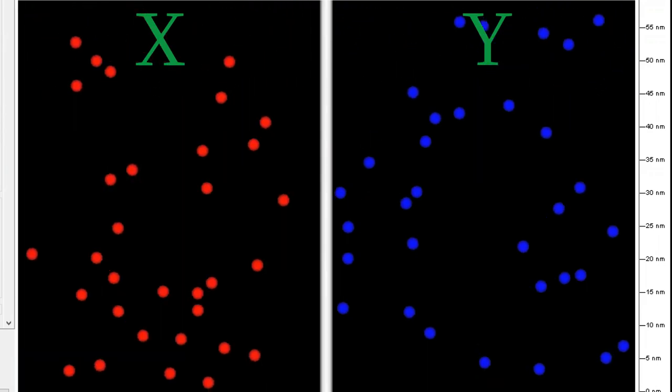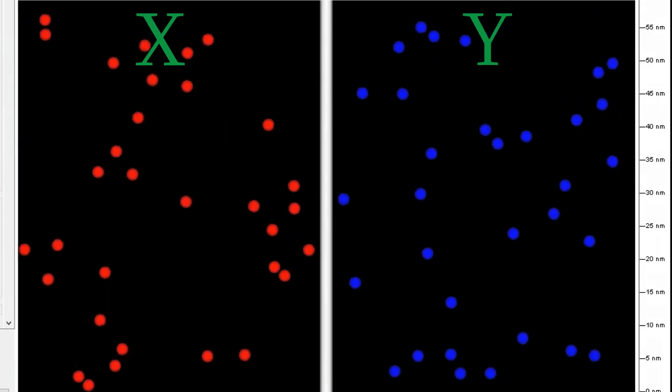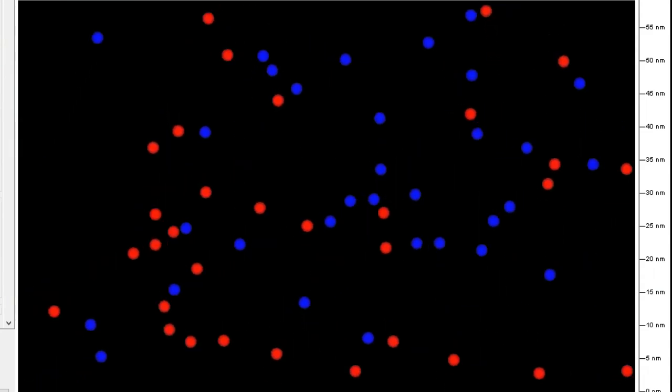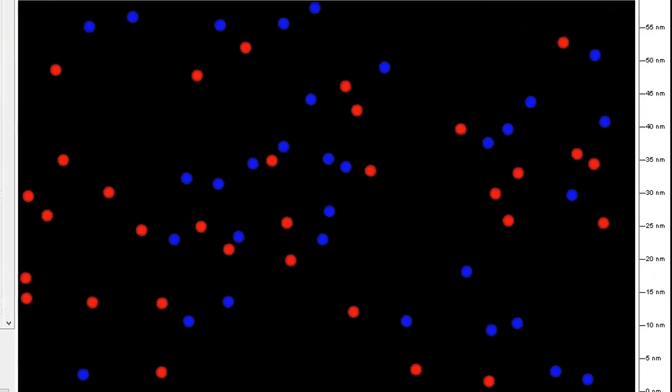For instance, suppose all the molecules in x are colored red, and all the molecules in y are blue. In this example, the two sets of molecules are mixed together, and that's okay for our purposes.